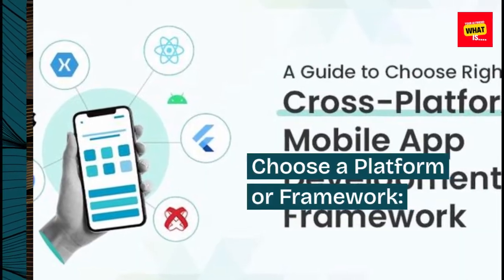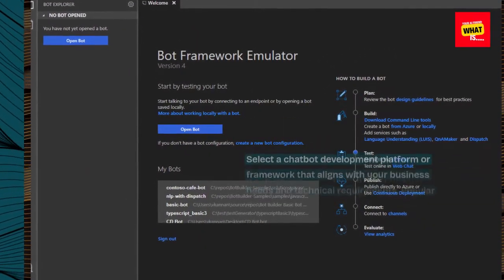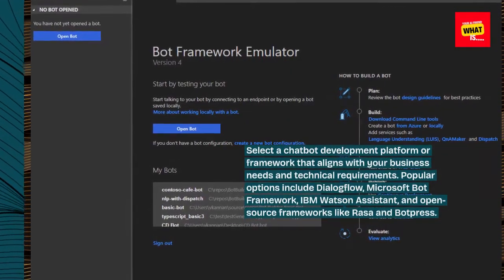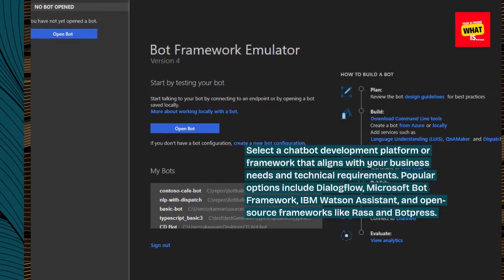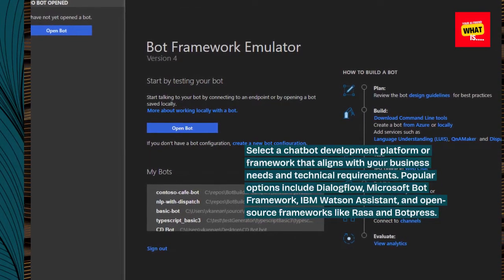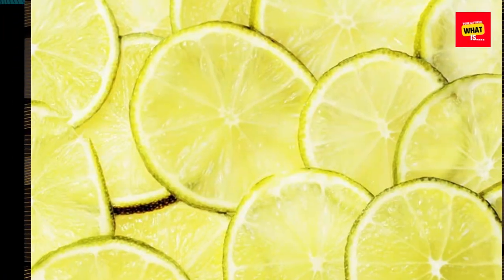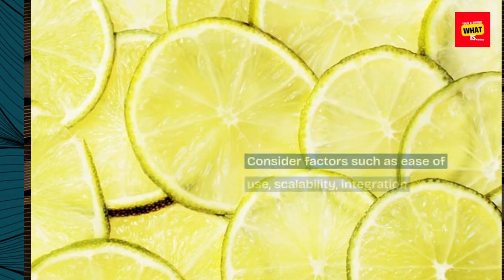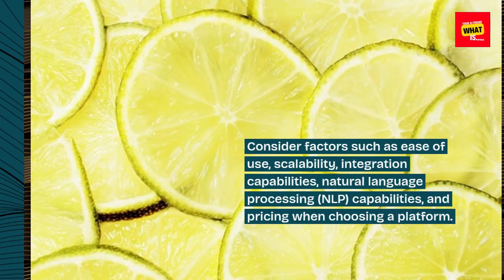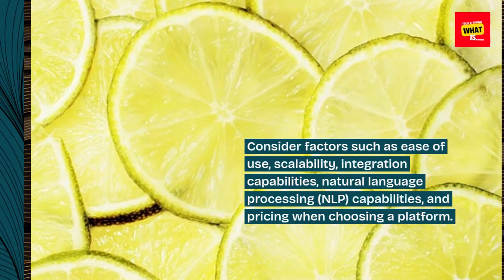Choose a Platform or Framework. Select a chatbot development platform or framework that aligns with your business needs and technical requirements. Popular options include Dialogflow, Microsoft Bot Framework, IBM Watson Assistant, and open source frameworks like Rasa and BotPress. Consider factors such as ease of use, scalability, integration capabilities, natural language processing (NLP) capabilities, and pricing when choosing a platform.